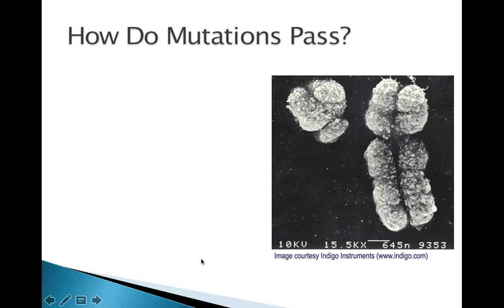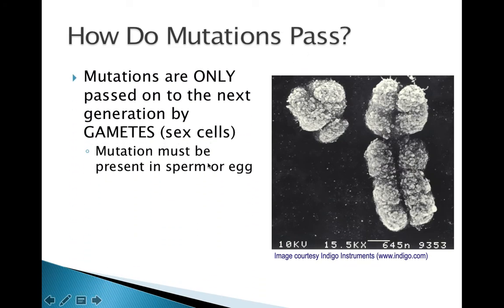So how do mutations pass? How are they inherited? There's only one way they can be inherited — mutations are only passed on to the next generation by gametes. Your gametes are your sex cells: for males, those would be sperm cells; for females, your gametes are your egg cells. So if you have a mutation — an extra piece of DNA, a missing piece of DNA, or inverted DNA — if something's wrong on one of your sperm or egg chromosomes, and they're used to make a baby, then the baby would inherit that chromosomal problem or genetic mutation.